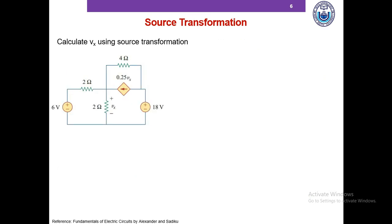Let's look at another example. Here we need to determine Vx, the voltage across the 2 ohm resistor, using source transformation. We could do nodal analysis: grounding the bottom node, we know one voltage is 6V and another is 18V, leaving only one unknown voltage, so nodal analysis seems like a good option.